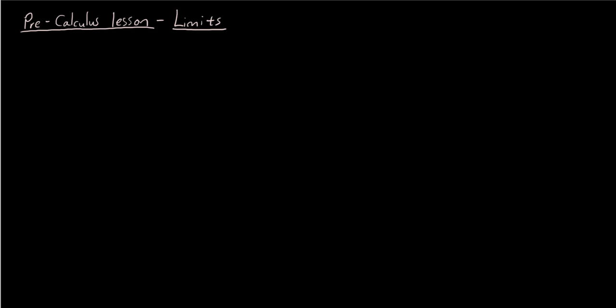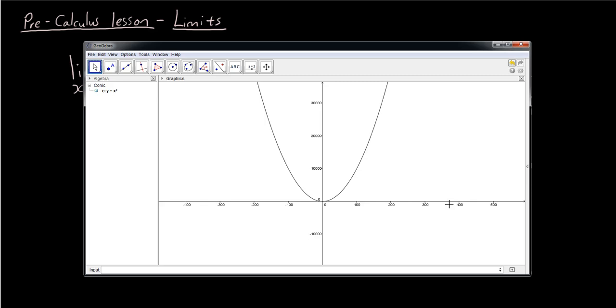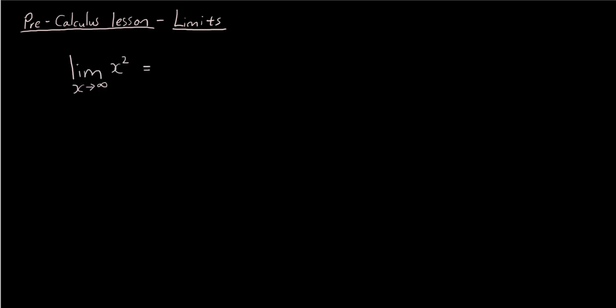The way we express that using the concept of limits is: the limit of the function x squared as x approaches infinity. So you write 'lim' with x approaching infinity underneath, then x squared. What this is saying is: as x approaches infinity, what does y approach? As x gets larger and larger, does y also get larger and larger towards infinity? And the answer is yes — y also approaches infinity.